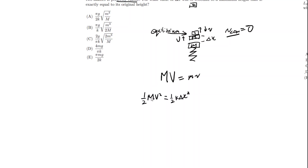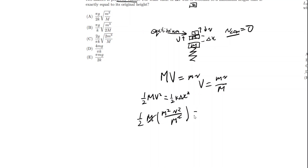There is no capital M term here — well, it would kind of be in the numerator. So we have one-half M times V equals Mv over M, giving M squared V squared over M squared, which cancels, equal to one-half k delta x squared. All we need to find is this speed V in terms of things that don't include H, because the answer choices don't have H.